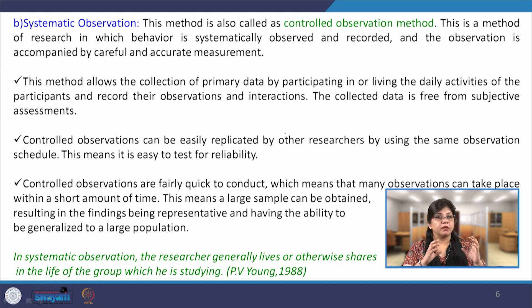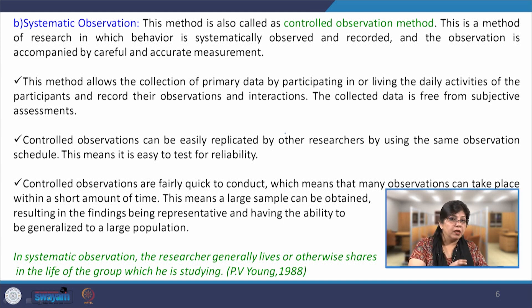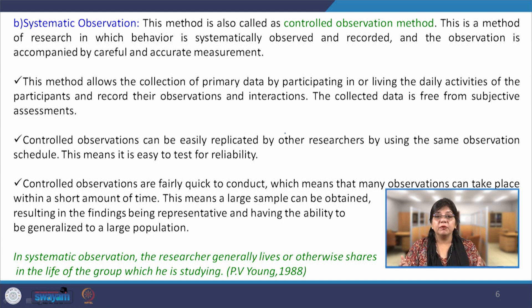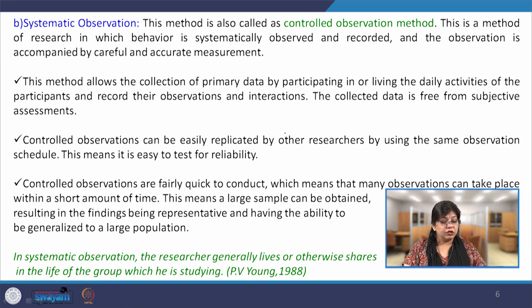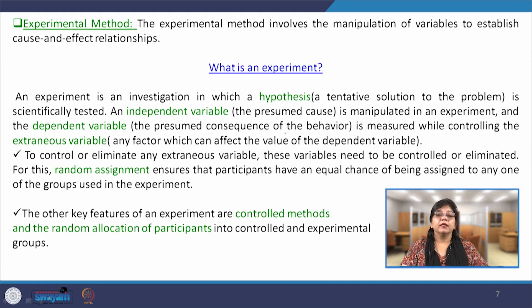For example, if we are studying racial discriminatory attitudes in one study group, we can replicate the same study onto another study group to make a comparative analysis and understand the reasons or differences of opinion among people that lead to racial discrimination. This is how systematic observation is considered more methodological and systematic in nature. In systematic observation, the researcher generally lives or otherwise shares the life of the group being studied — this is the most important feature of systematic observation.